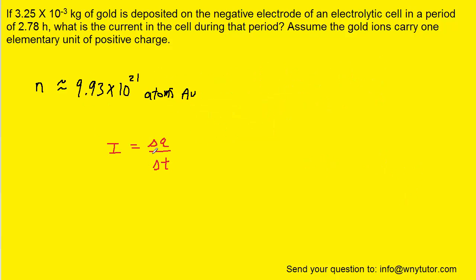We next turn to the current equation, which tells us that current is equal to the amount of charge that passes a given point divided by the time. Now, we were given a time of 2.78 hours. What we need to next figure out is the amount of charge that's passing.